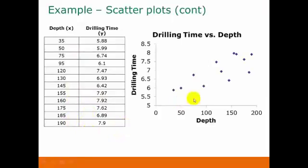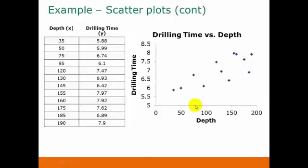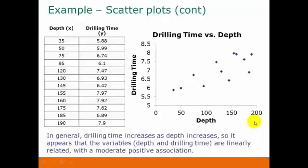Looking at our scatterplot, there's not a strong straight line pattern here, but it does appear that in general the data points go up as we go from left to right. It's somewhat of a straight line pattern, so we would say that our two variables are linearly related with a moderate positive association.